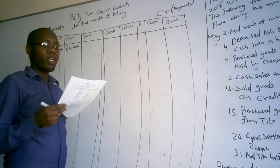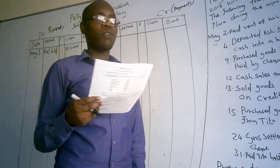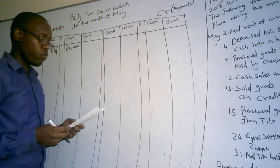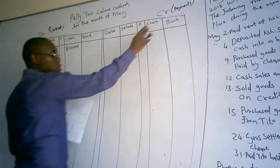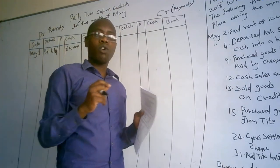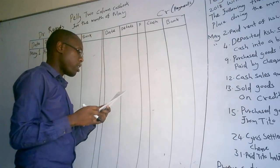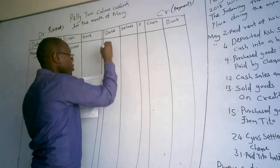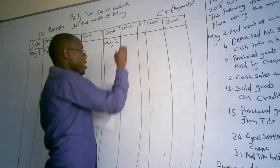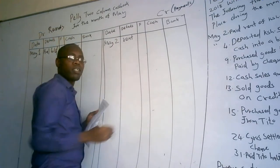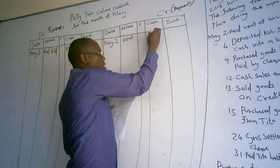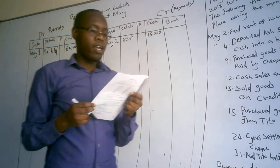On May 2, they are saying paid rent of $15,000 in cash. Because we are talking about payments and all payments are recorded on the credit side, we record this on the credit side. It is May 2, under details I write 'rent,' and because it was in cash, I write $15,000 under the cash column.